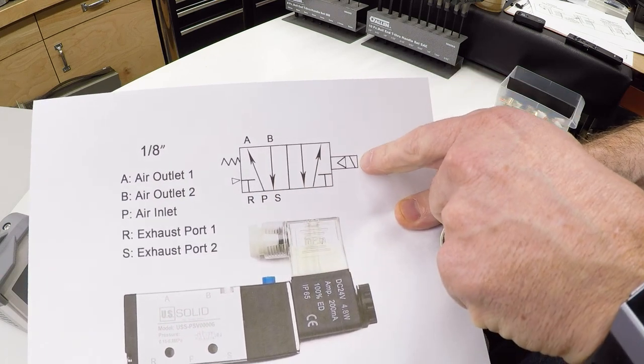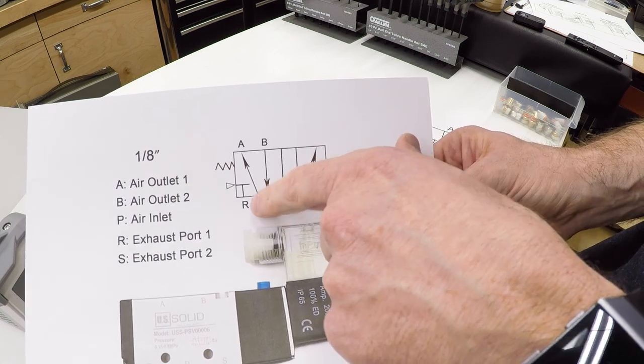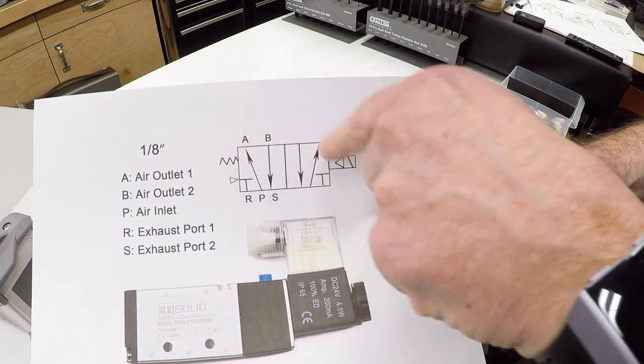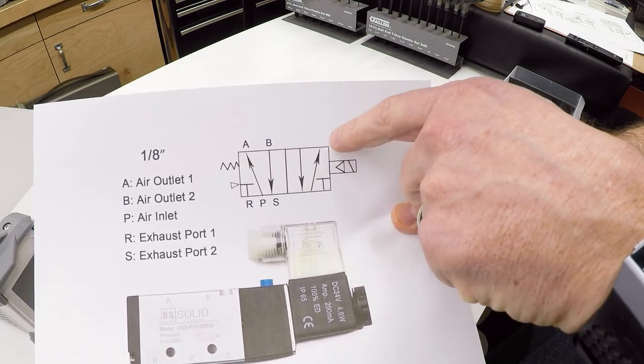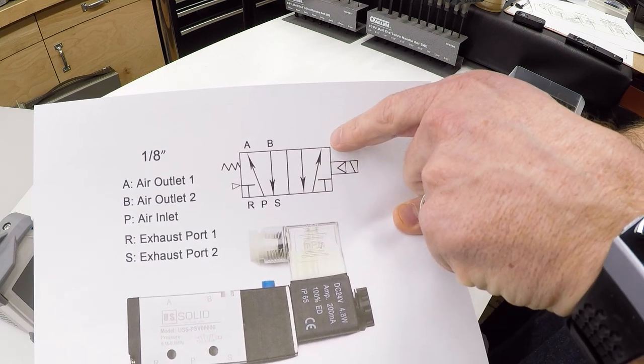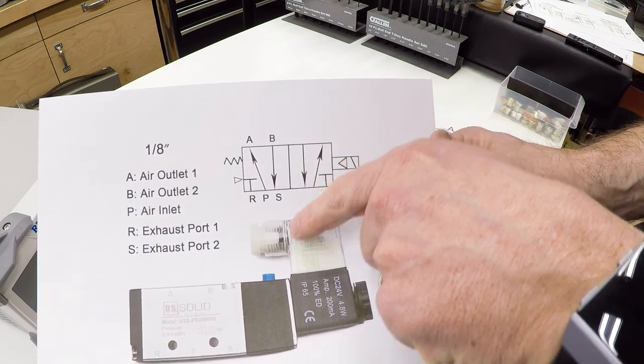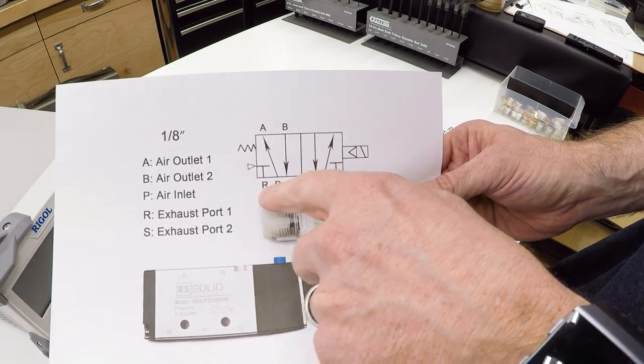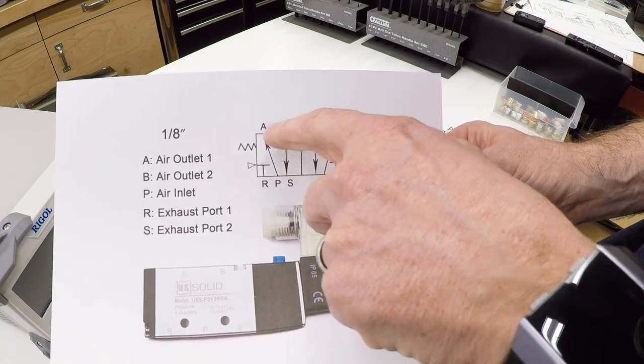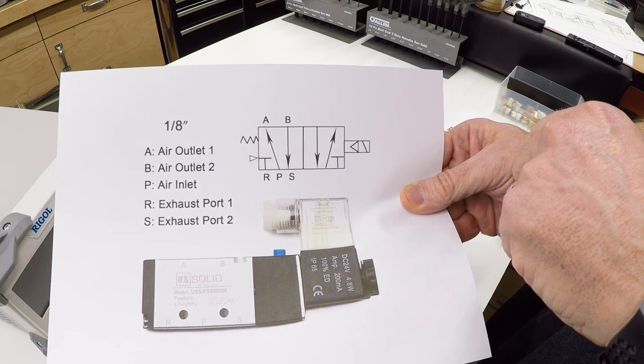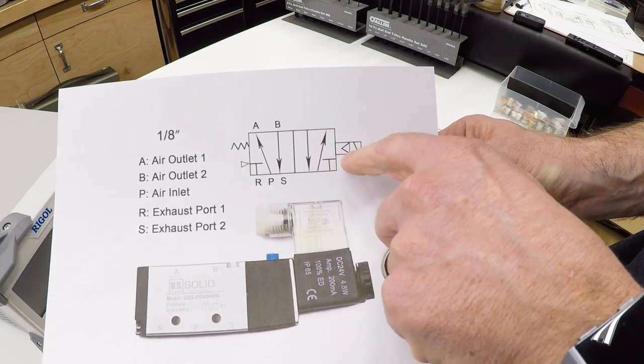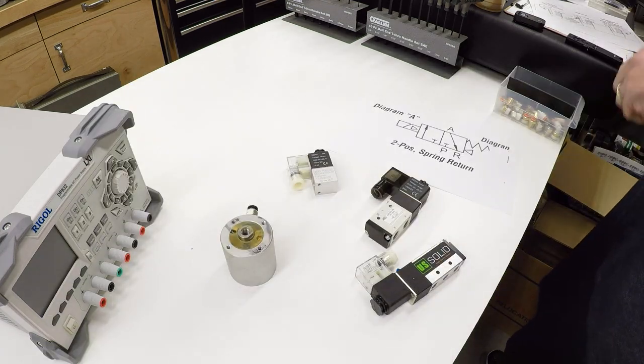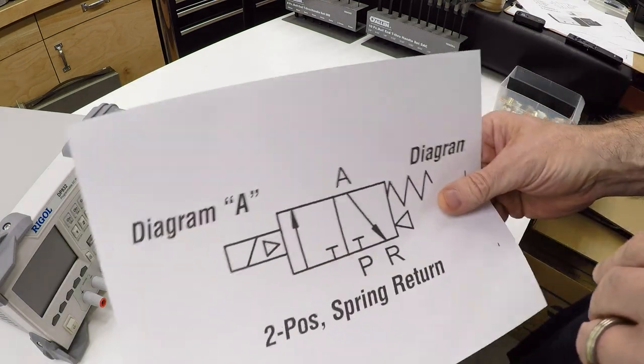Then when you activate the solenoid, it switches to the other state. Where the pressure was going to the A side, now the pressure will go to the B side. Pressure goes to the B side, pushes the cylinder the other way, and the other end of the cylinder is open to the atmosphere. So you provide pressure in and two exhaust ports, and then these two hook to the two ends of the cylinder.